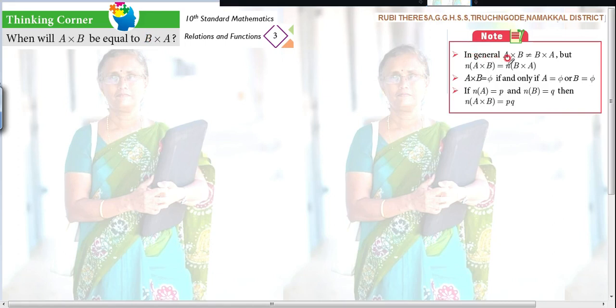They have given n(A×B) equal to n(B×A). A×B is not equal to B×A, but n(A×B) is equal to n(B×A). And also, how can you find out the number of pairs in A×B? If n(A) is equal to P and n(B) is equal to Q, then n(A×B) is equal to PQ. That is, n(A) into n(B). n(A×B) is nothing but n(A) into n(B), that is P into Q, which is PQ.